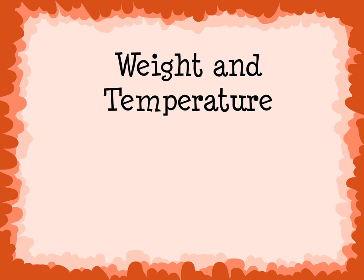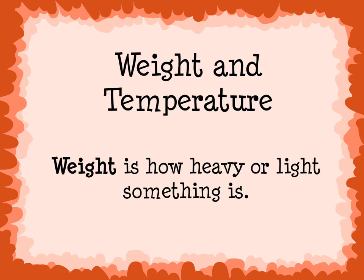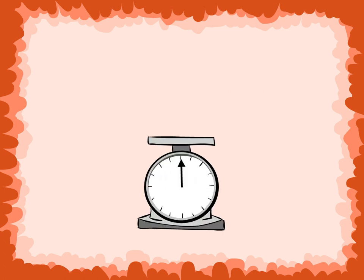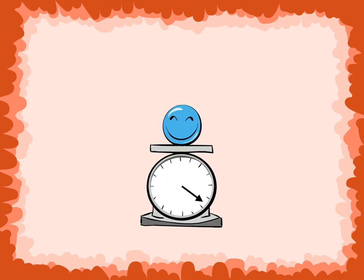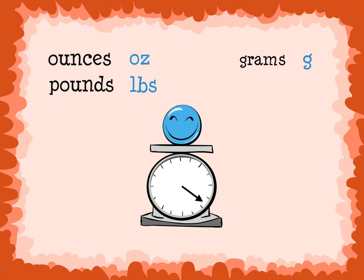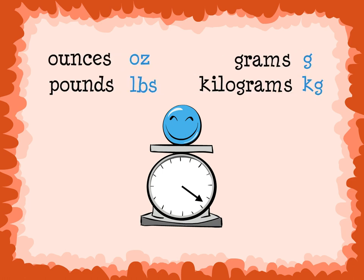Weight and Temperature. Weight is how heavy or light something is — how much something weighs. We find the weight of objects by placing them on a scale. Weight is measured in ounces, pounds, grams, or kilograms.